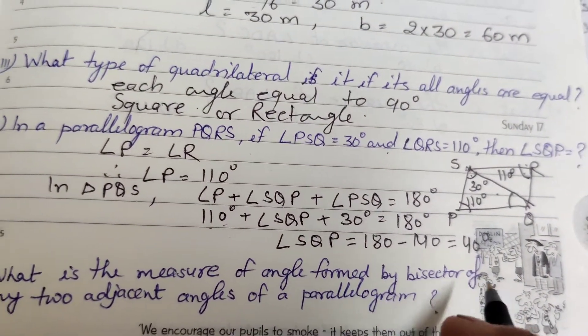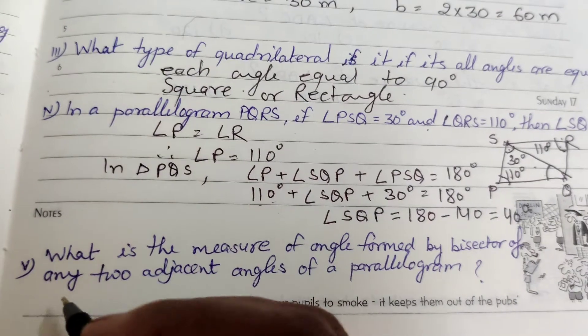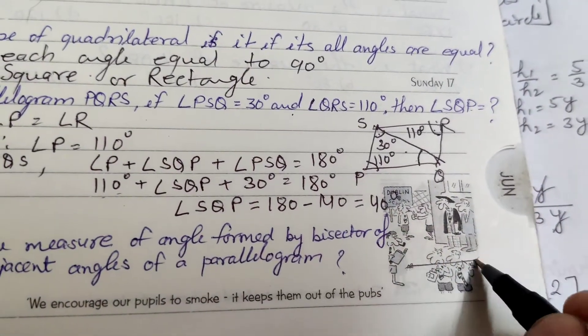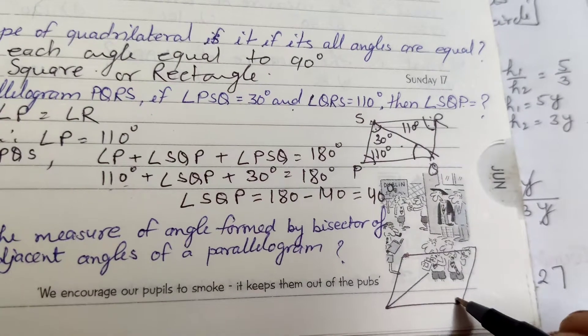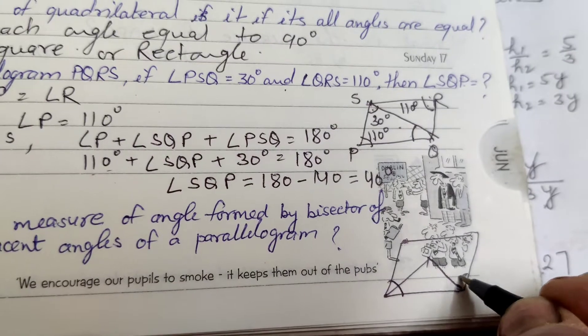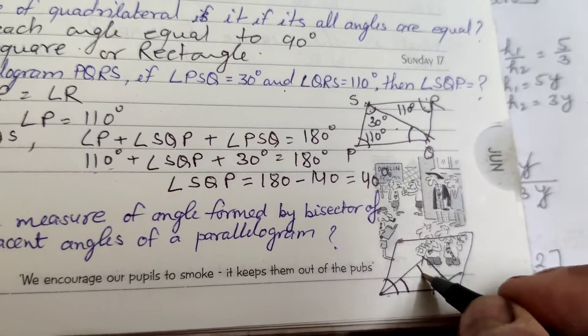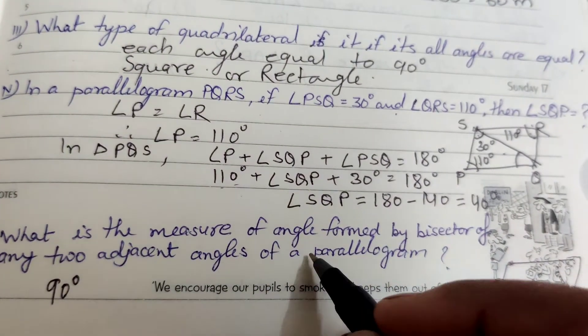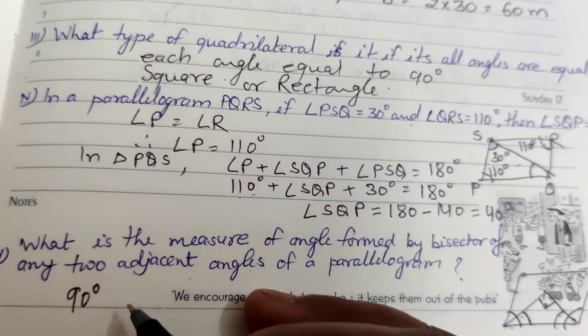The last question: What is the measure of the angle formed by the bisector of any two adjacent angles of a parallelogram? We have to prove that this angle is 90 degrees. In a parallelogram, the sum of two adjacent angles is 180 degrees. Half of the sum is 90 degrees. By triangle sum property, the angle formed is 90 degrees. The measure of the angle formed by the bisector of any two adjacent angles of a parallelogram is 90 degrees.